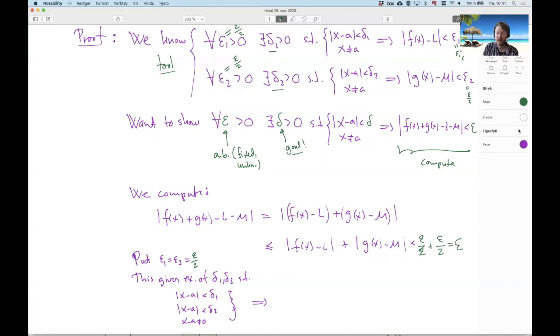So let's just write it down here. This means that f of x plus g of x minus L minus M is less than epsilon, which is exactly what I needed.